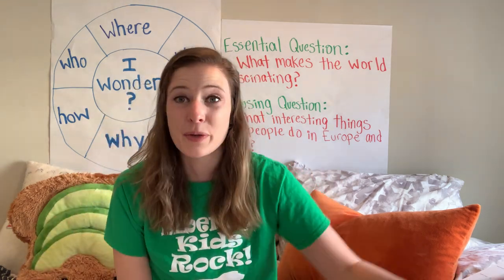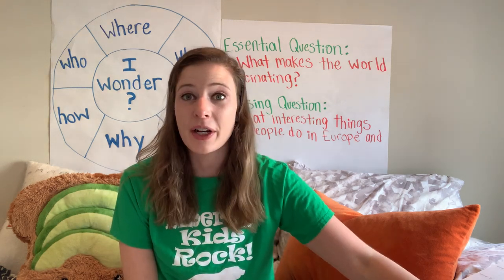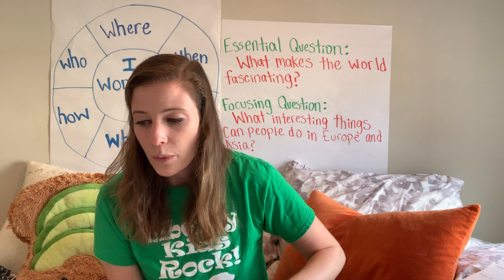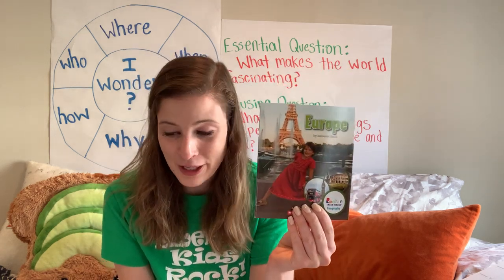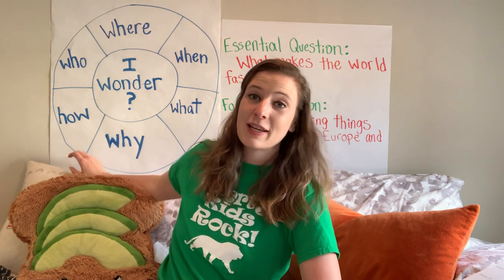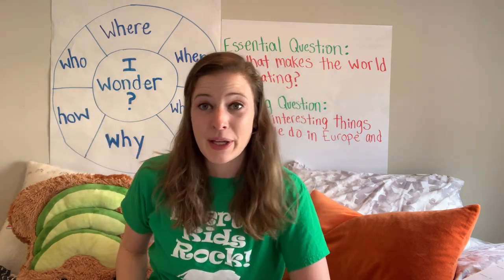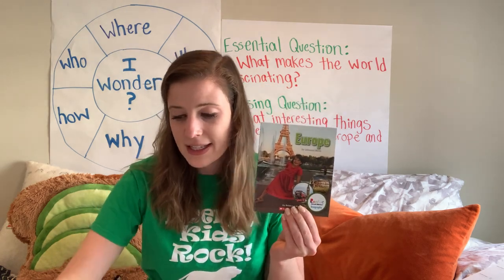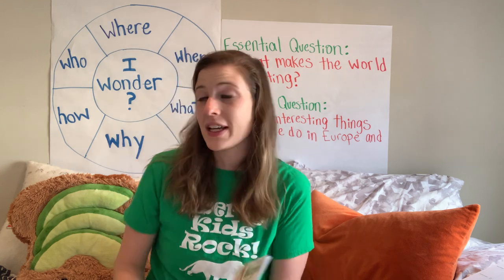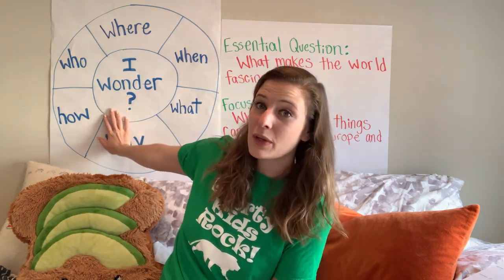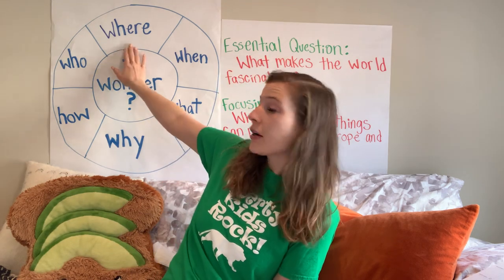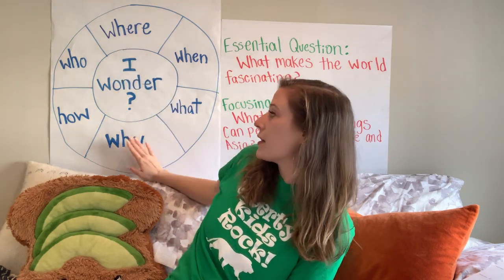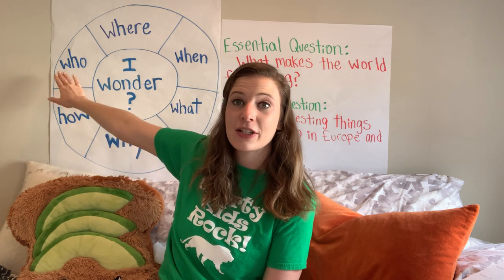Our map is a really helpful tool to look at where we are learning about. For today, we are going to be exploring Europe and reading this informational text about Europe. Because it's our first read, we are going to just be thinking about things that we notice or things that we wonder. Our wonder wheel words are: where, when, what, why, how, and who.